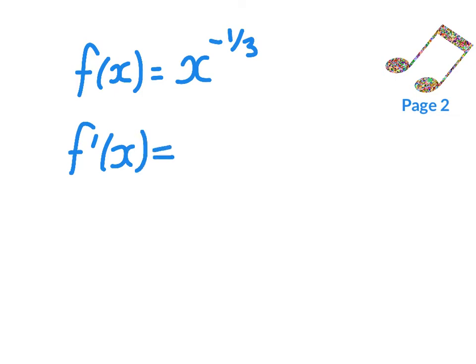we multiply by the power, so negative 1 third, times x to the power of, we reduce by 1.